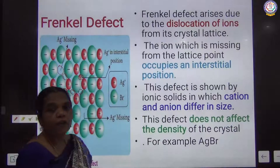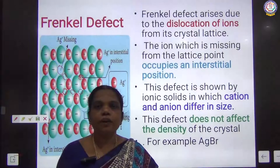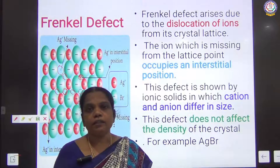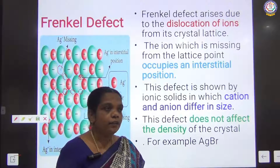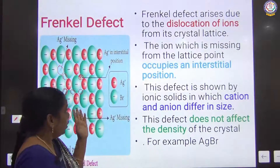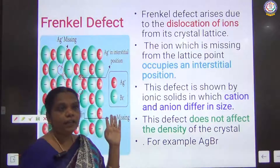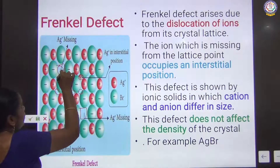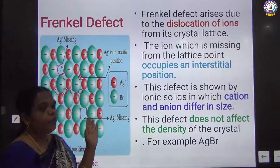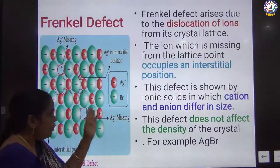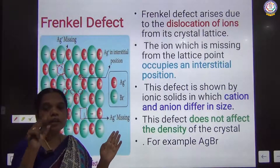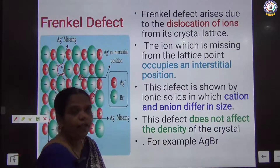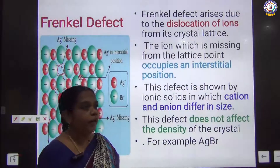In the Frenkel defect, there is no missing of ions, so there is no change in density and no change in electrical neutrality. All cations and anions are present in the crystal. Only a lattice vacancy is created because the smaller cation has moved to occupy a void between the anions. This is called the Frenkel defect.